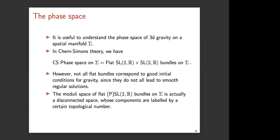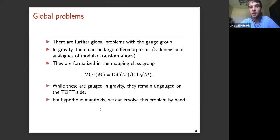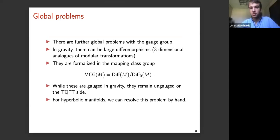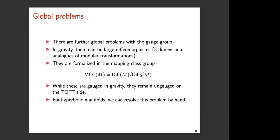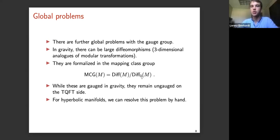A question arose about why we should gauge the mapping class group in 3D gravity. For a closed manifold, we need to gauge it. For an open manifold, the mapping class group consists of diffeomorphisms that act trivially on the boundary but can do anything in the bulk, modded out by those connected to the identity. This has nothing to do with asymptotic structure directly, but it does interact in an interesting way with the boundary mapping class group, which we'll see later.